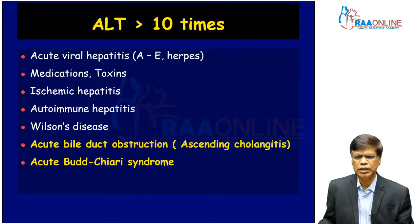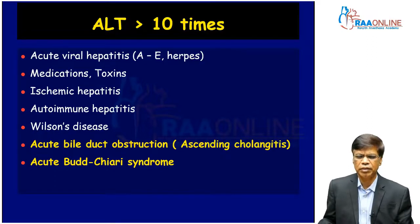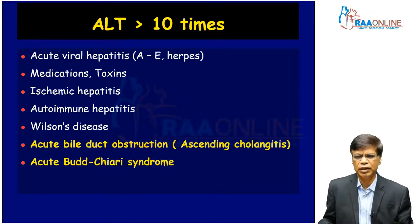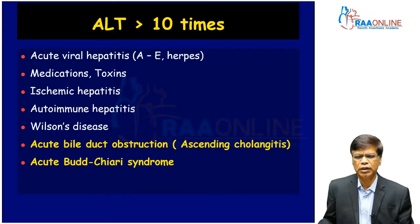Ascending cholangitis, contrary to expectation, can present with a predominantly hepatocellular enzyme rise rather than an alkaline phosphatase and gamma-GT rise. Another drainage problem away from the liver: the central vein leads to the hepatic vein, and acute hepatic vein obstruction can cause sudden, severe backflow ischemia, resulting in a sharp rise in ALT that one should be aware of.